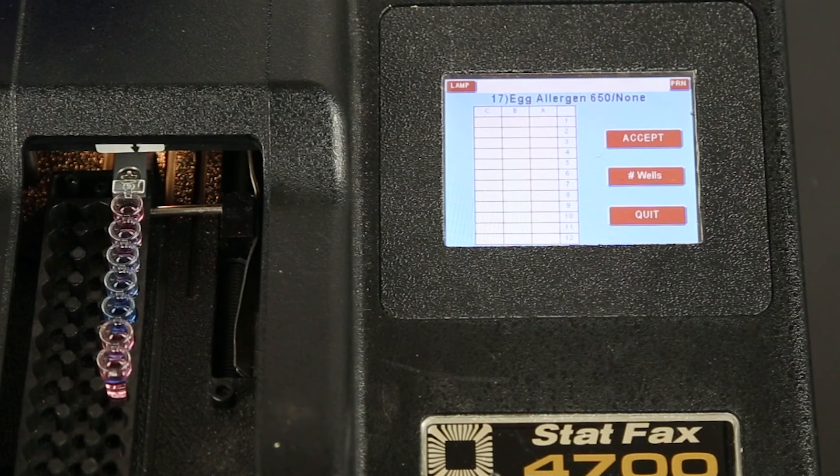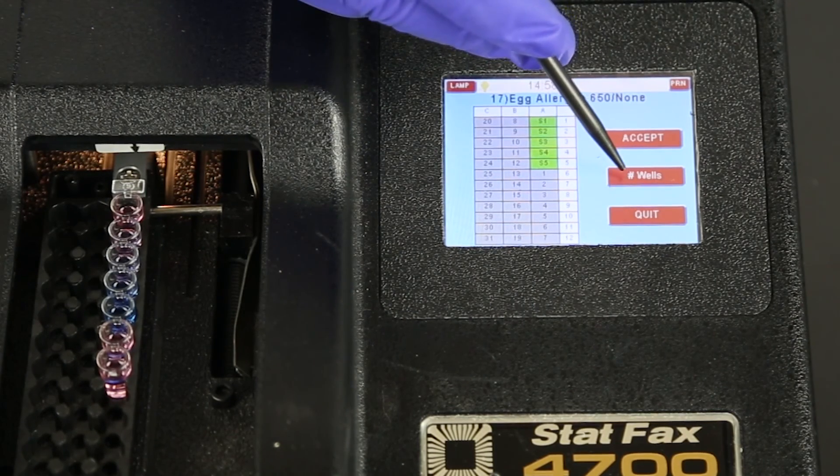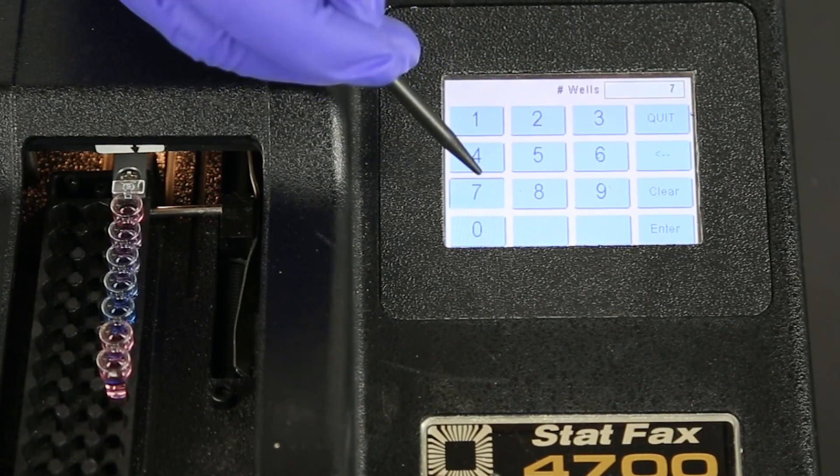After selecting the test, there will be three options: accept the test, limit the number of wells, or quit the test. Limiting the wells is not required but helpful when running only a few wells, as the reader will read all 12 positions unless limited. Select limit wells and press 7 and enter.